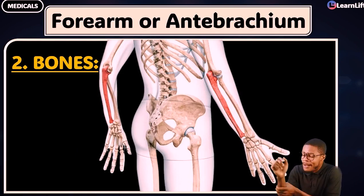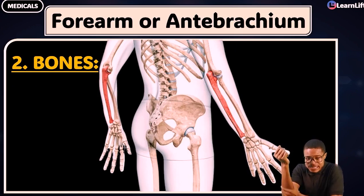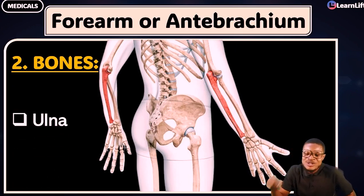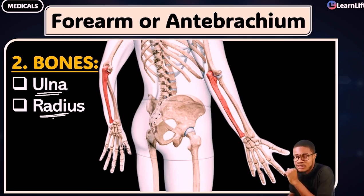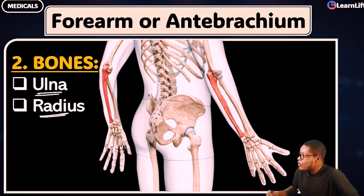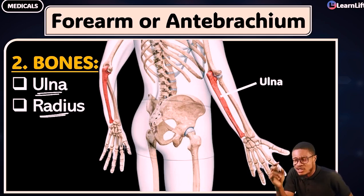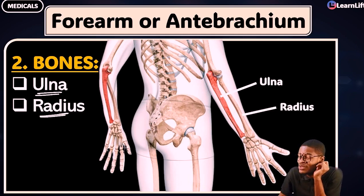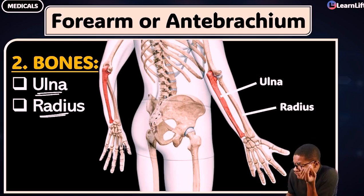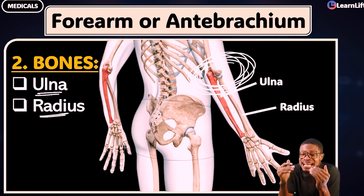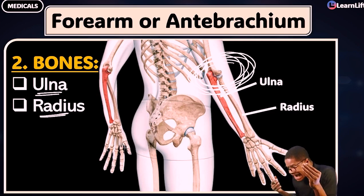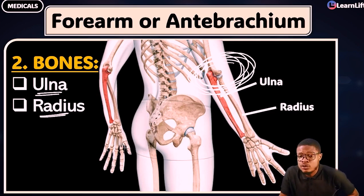What are the bones of the forearm or anti-brachium? There are just two bones. Number one is the ulna, and number two is called the radius. The ulna shown in red is longer or bigger than the radius, because of the presence of the olecranon process.